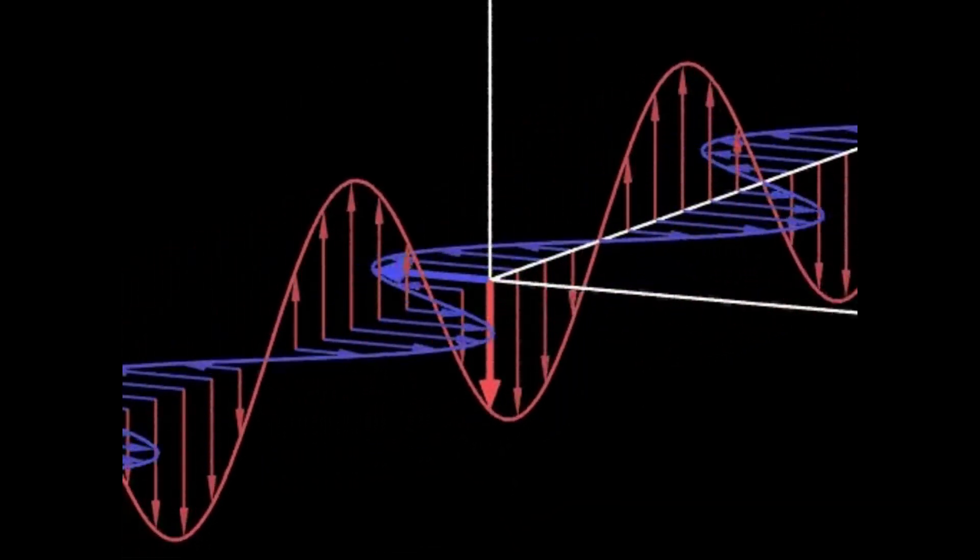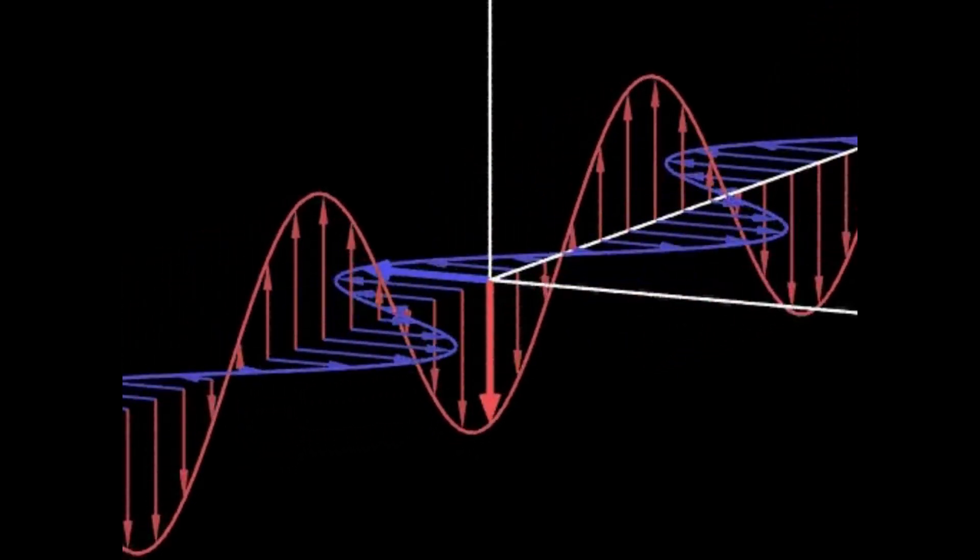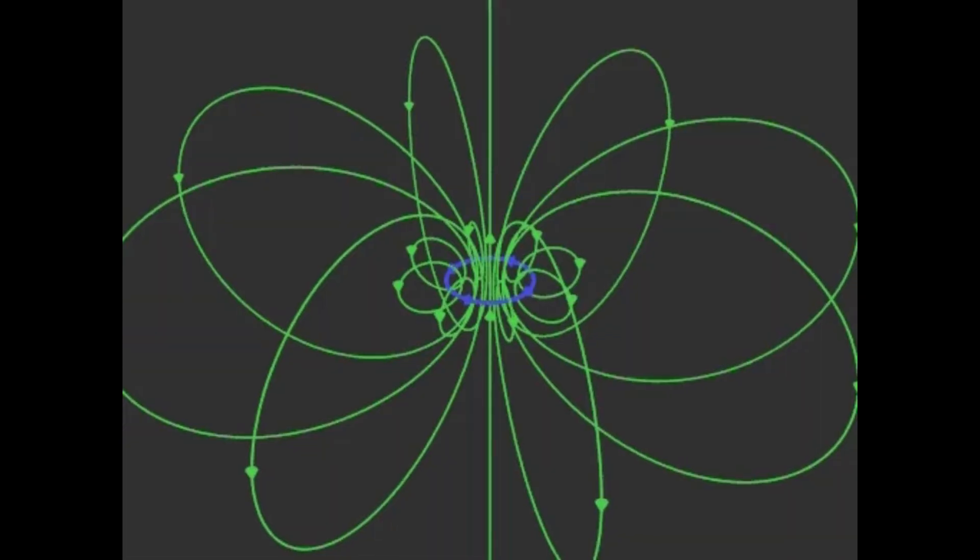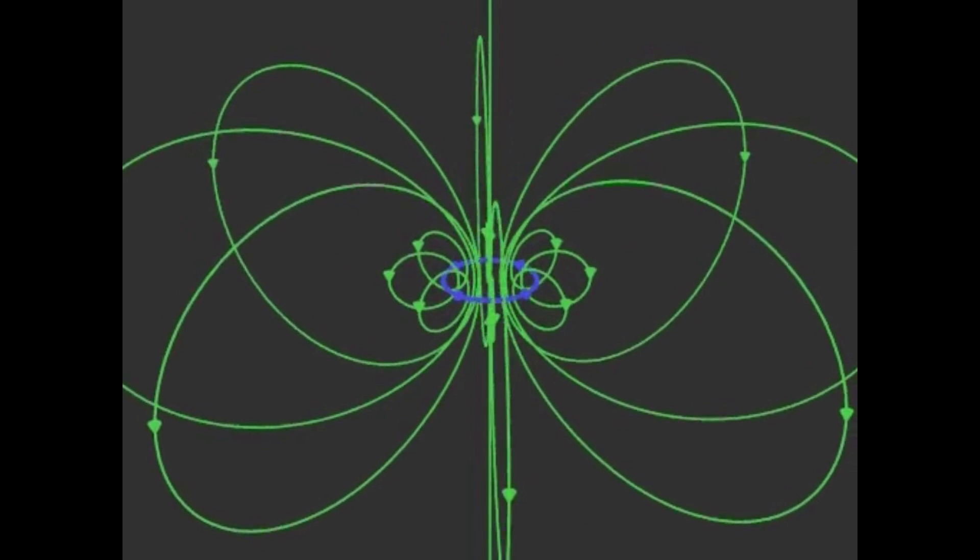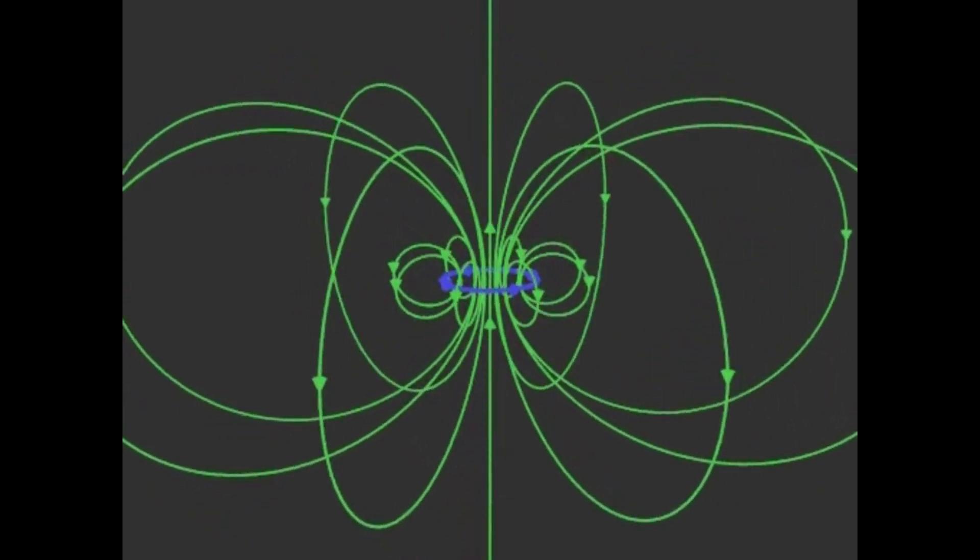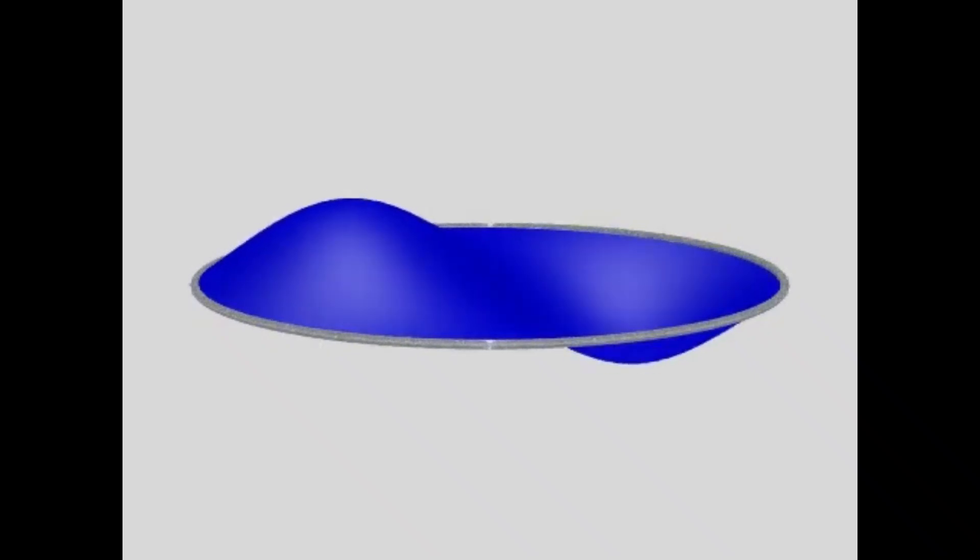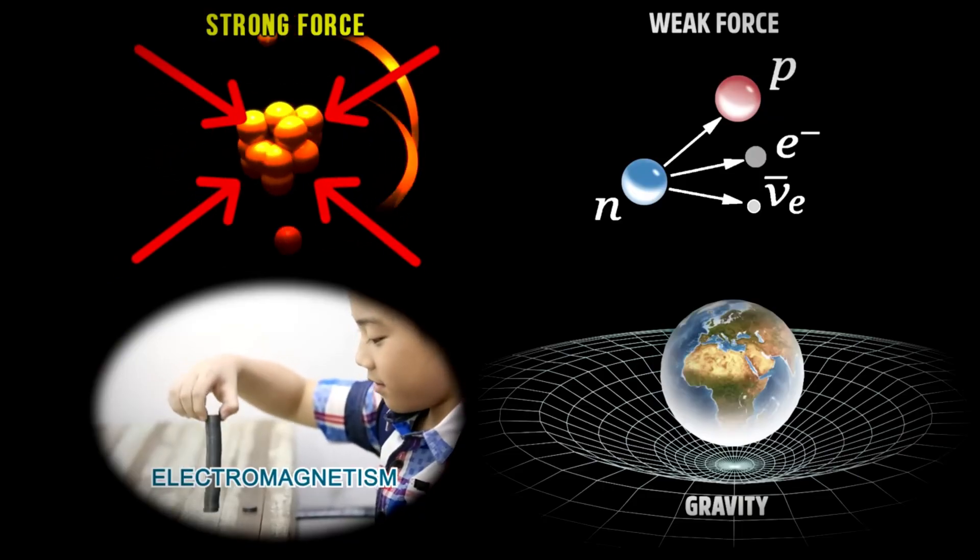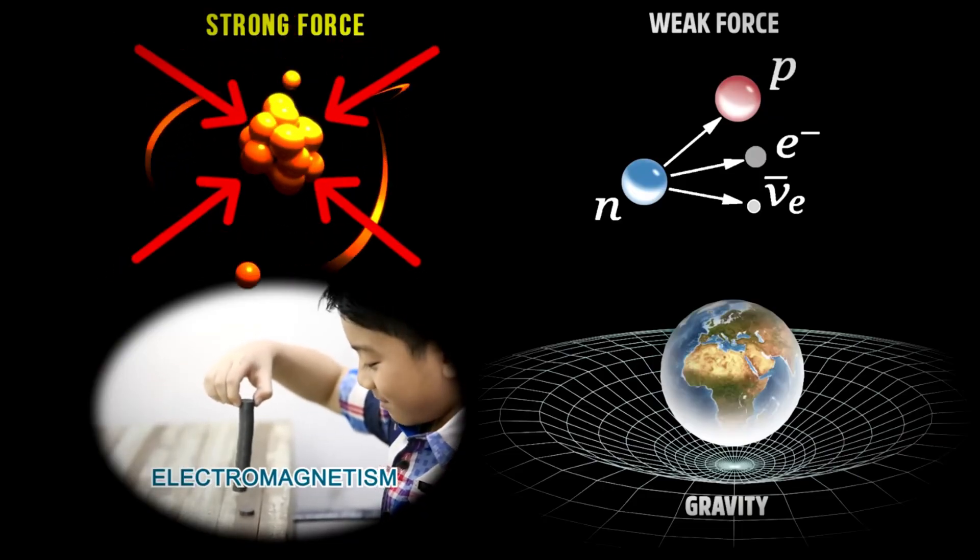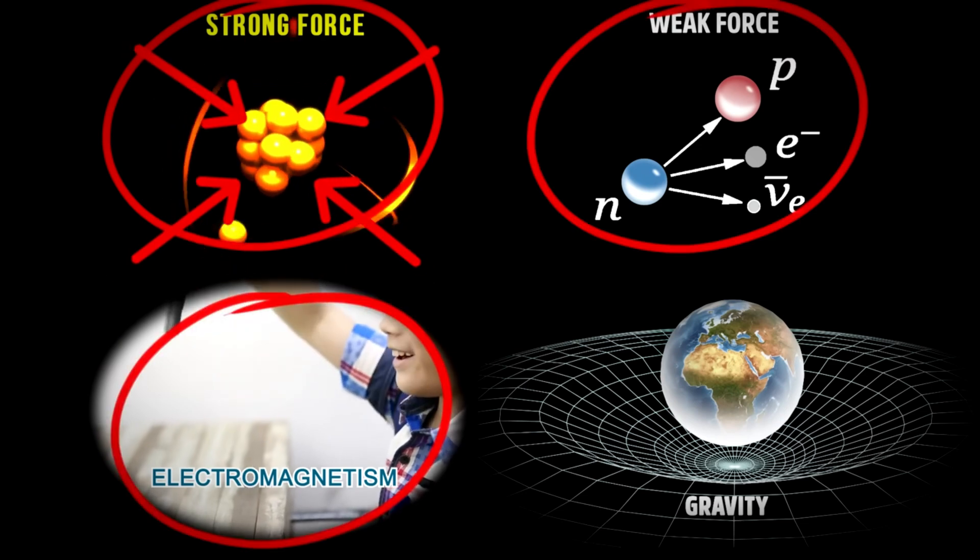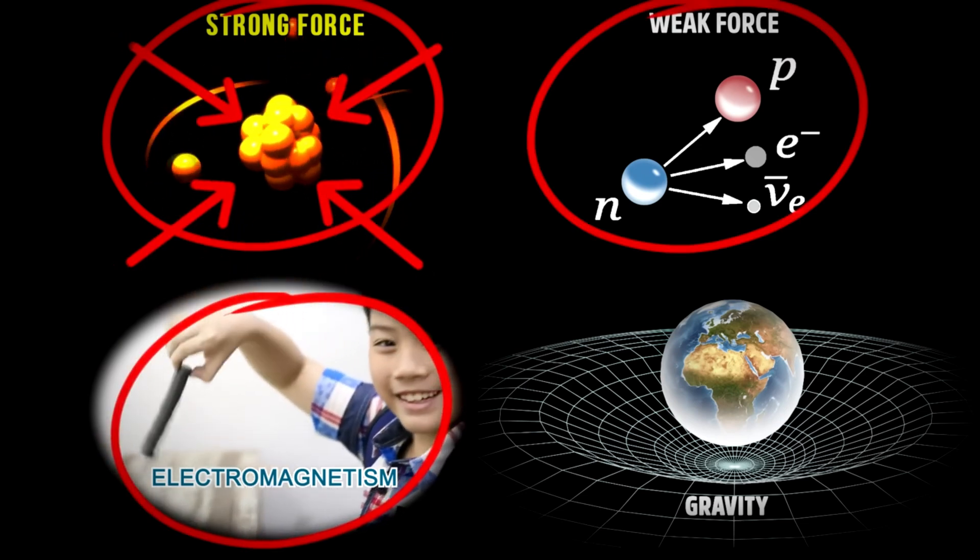But in physics, fields aren't just passive background data. Fields carry energy. They influence particles. In many cases, they are the particles. In modern physics, fields are real, physical things. They can ripple. They can vibrate. They can even collide and interfere with each other. And every fundamental force like gravity, electromagnetism, the strong and the weak nuclear forces is described using fields.